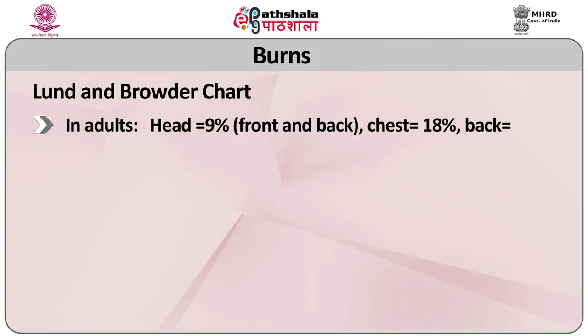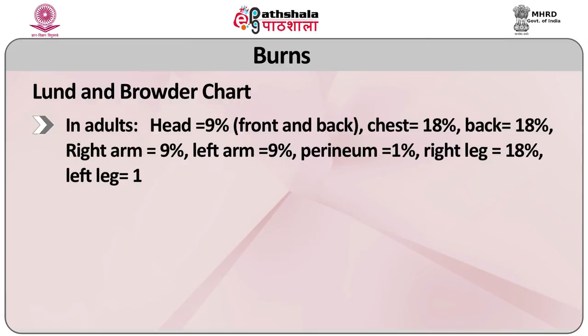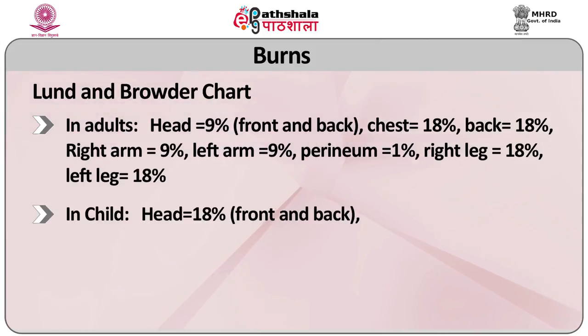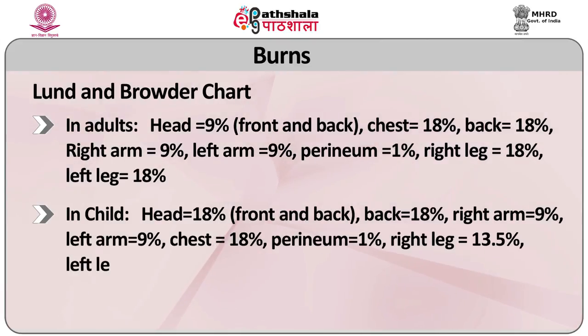Next is the assessment of burn area — the rule of nines. The rule of nines acts as a rough guide to the body surface area, using the Lund and Browder chart. According to age, there is a change in the size of the head, thigh and legs. The estimation of burnt surface area can be worked out by the rule of nines. In adults: head is 9%, front and back chest is 18%, back is 18%, right arm is 9%, left arm is 9%, right leg is 18% and left leg is 18%. In a child: head is 18%, front and back chest is 18%, arm 9%, and each leg is 13.5%.